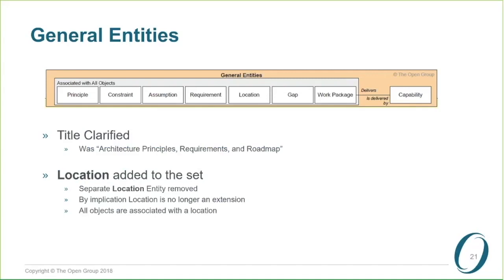We've moved the location entity into this category because location shouldn't just sit in the business architecture with random links. It is a characteristic of every part of the enterprise. In TOGAF 9.1 the location entity was colored, meaning it was seen as an optional extension. By moving it into general entities, we're saying it's no longer optional — it's something you really do need to take very seriously.